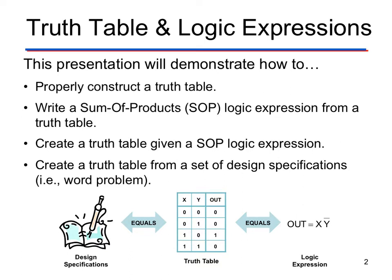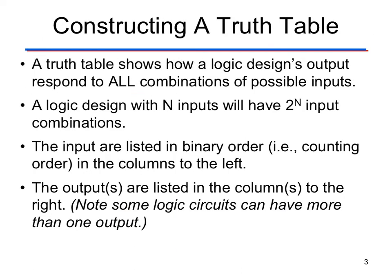Hopefully that will make sense soon. The purpose of a truth table is to investigate or determine what will happen with all the different input combinations. So if we have three inputs, we're looking at all the different possible zeros and ones that could be inputted into that circuit. The number of combinations is determined by the number of inputs — if we have N inputs, we will have 2^N input combinations, which is how many rows we need in our truth table.